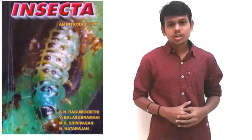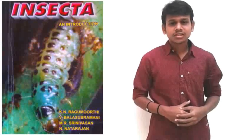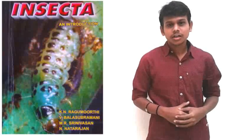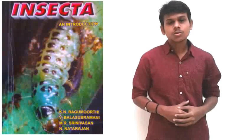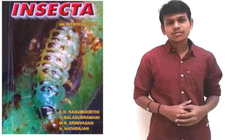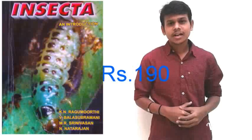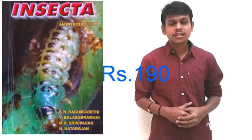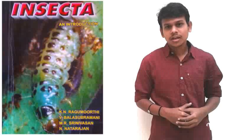Next, book number three: Insecta by Pragmurthy, Balasubramanian, Srinivasan and Natarajan. In this book, scientific information on basic entomology and insect taxonomy has been described in detail.